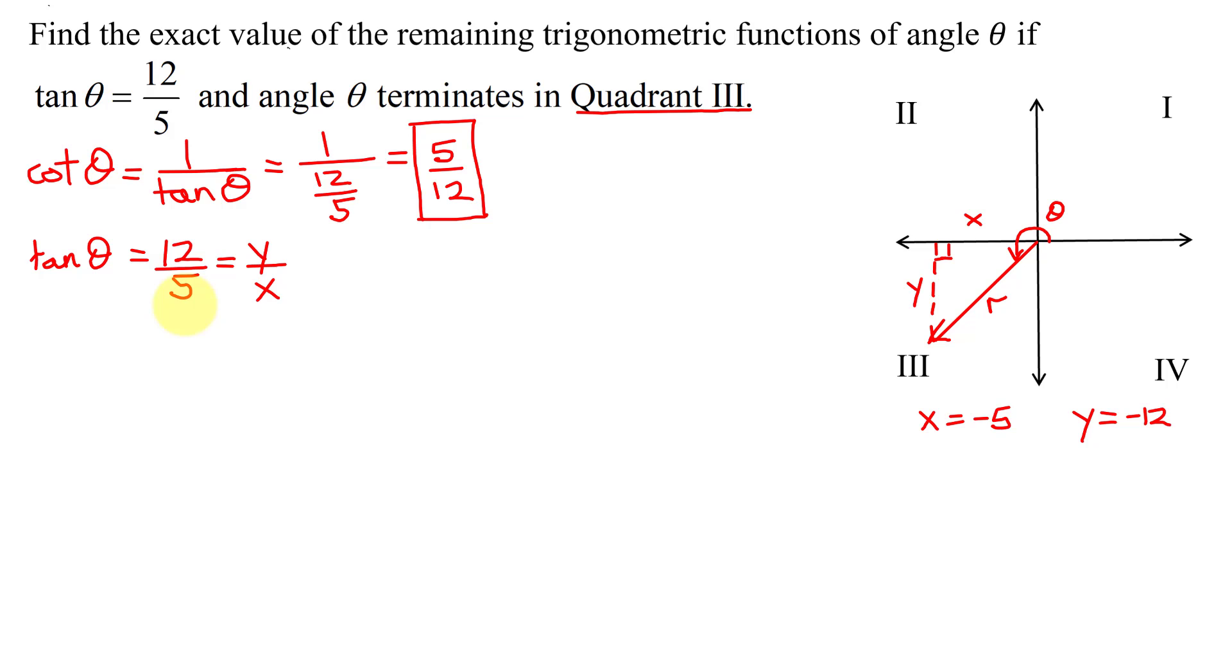Now, we need to find r. Remember, using the Pythagorean theorem, x squared plus y squared equals r squared. x is negative 5, so it's negative 5 squared, plus y squared is negative 12 all squared equals r squared.